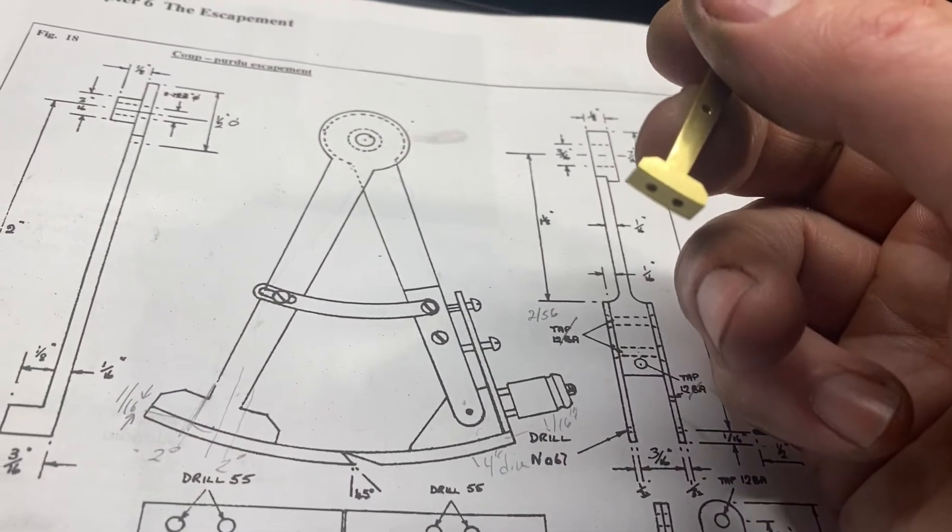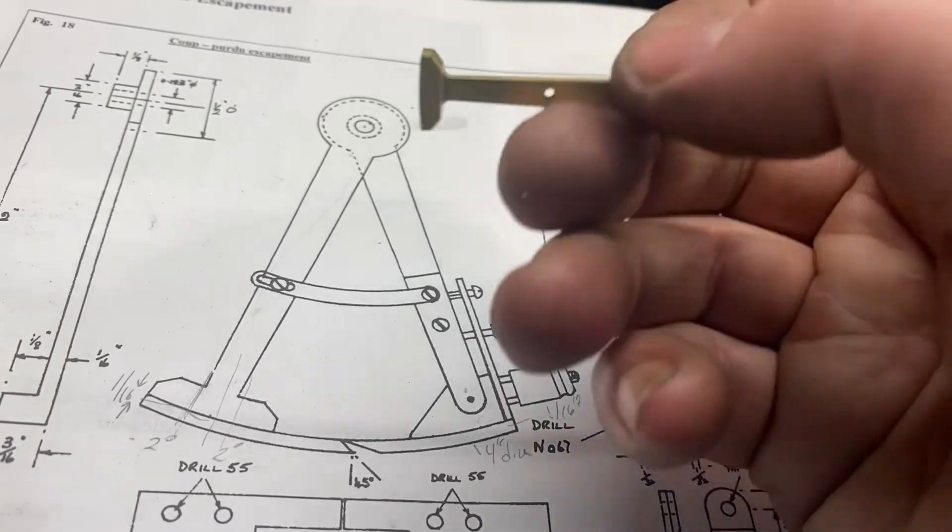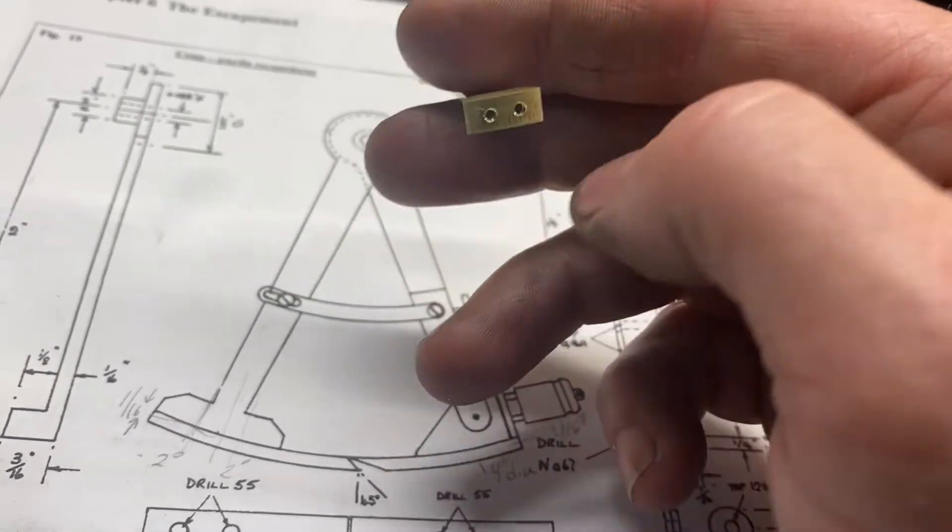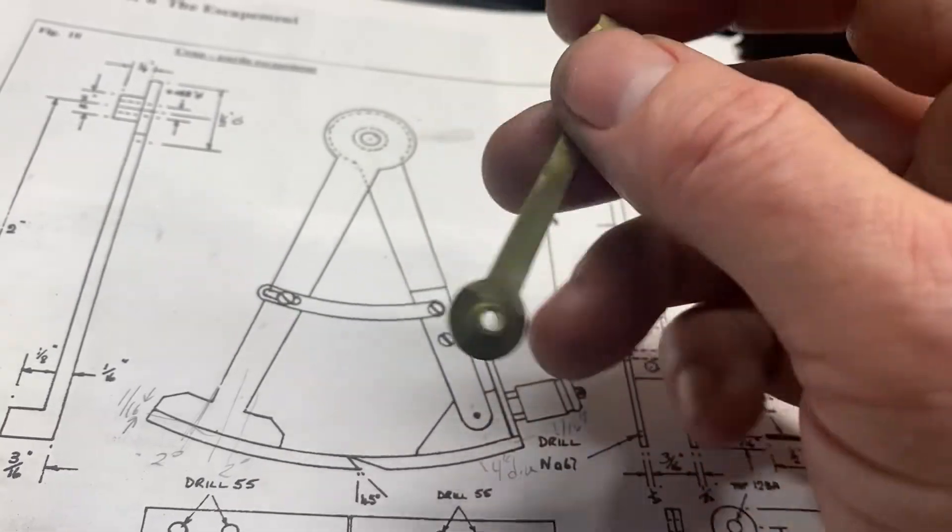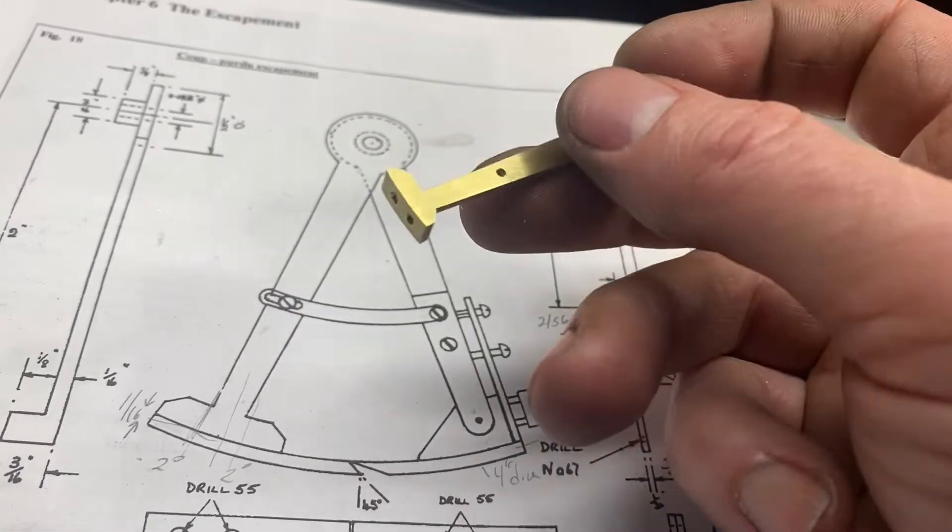Next, I'll make these pallets. Those have to be hardened - that's going to be another tricky one. Getting those holes put in place, getting them countersunk and on the right degree, and making sure it mates up nicely with this part.